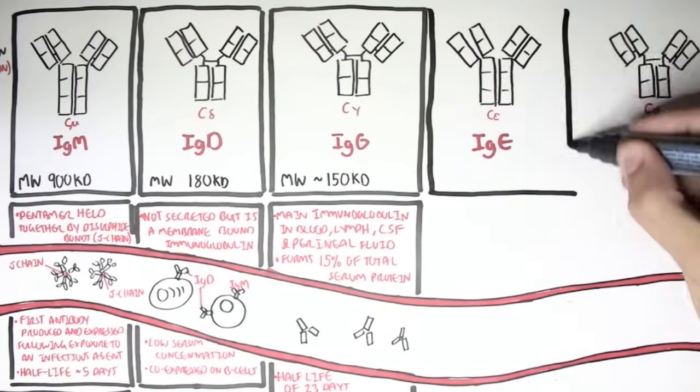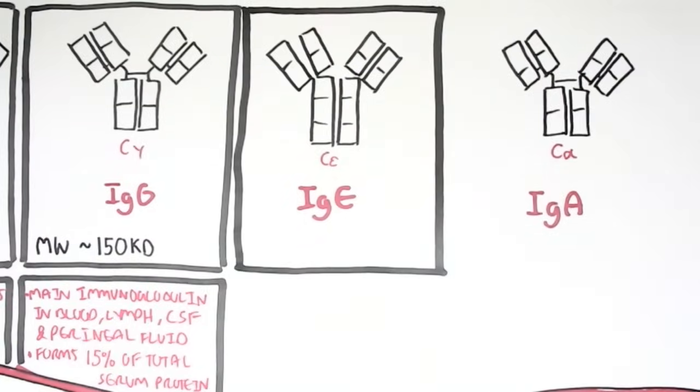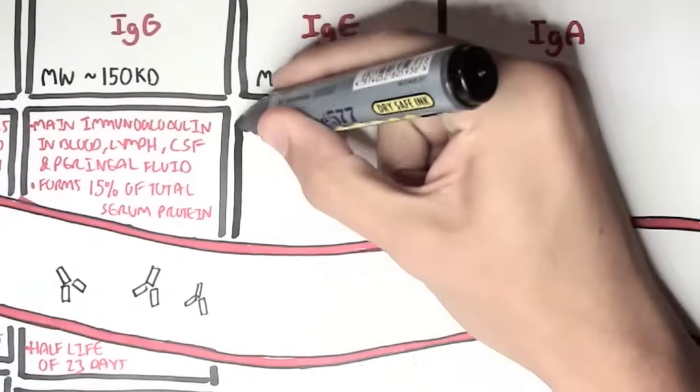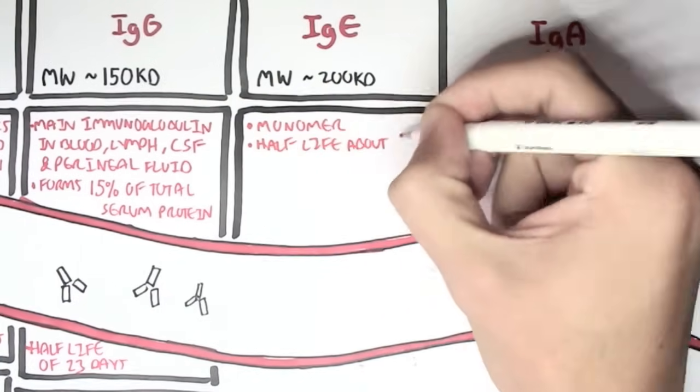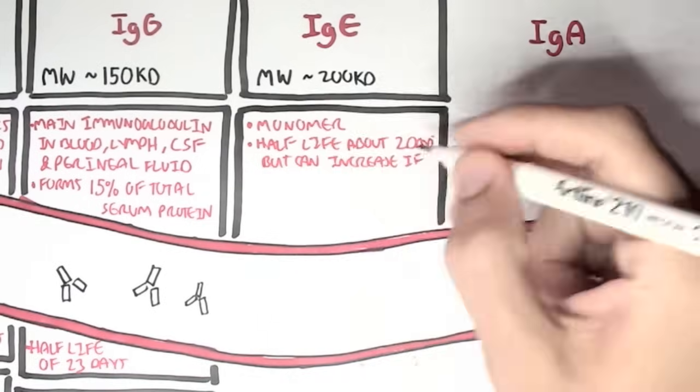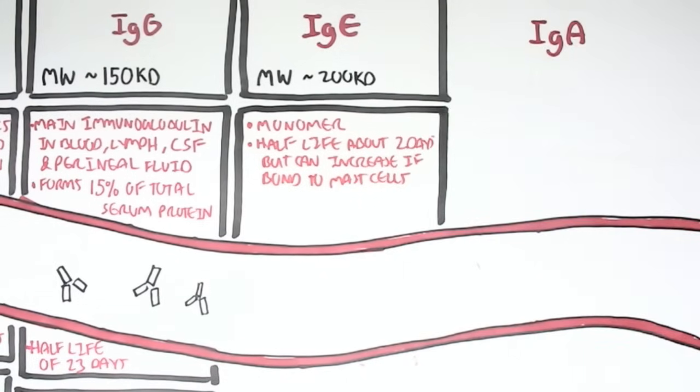Next is IgE, which has a molecular weight of about 200 kilodaltons. It is secreted as a monomer, as a single antibody. It has a half-life of about 2 days, but the half-life can increase if IgE is bound onto mast cells or basophils.